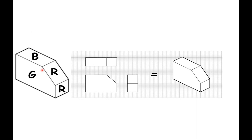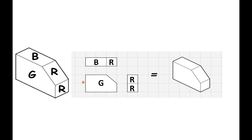For the last example, we have the letters G, B, R, and R. Let us place these letters on our orthographic view. For the top view, we have the letter B representing the top portion, and R representing the inclined surface also seen at the top. For the front view, it is represented by the letter G. And for the side view, it is represented by the letter R — the lower portion and the inclined portion at the top. So when it is inclined, it is also seen at the top and at the side of the object.